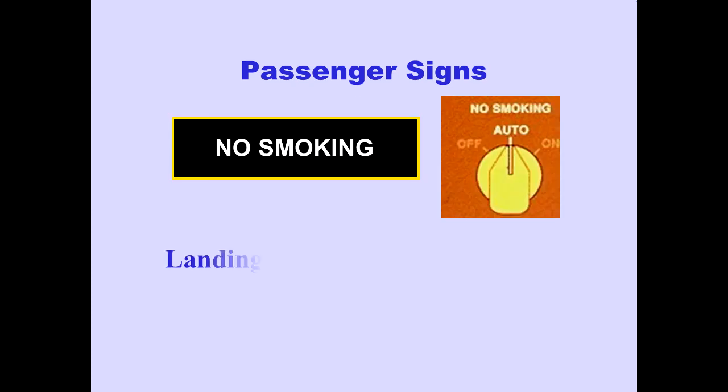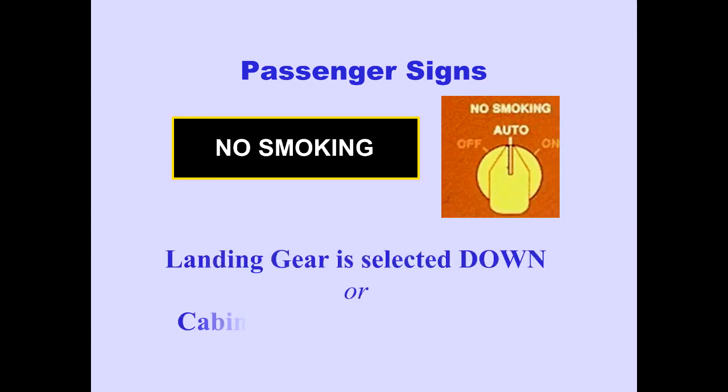With the no smoking sign selector in auto, the no smoking signs automatically illuminate when the landing gear lever is selected down or when the cabin altitude exceeds 10,000 feet.